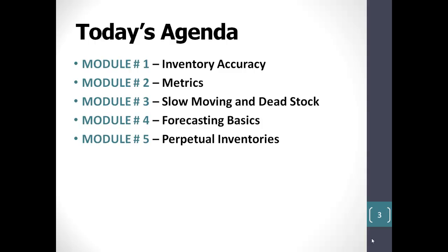Module 4 is titled Forecasting Basics, and deals with the underpinnings of the complex algorithms used in virtually all software systems. The last module, Module 5, titled Perpetual Inventories, deals with various approaches to creating an ongoing, deadly accurate inventory through cycle counting.